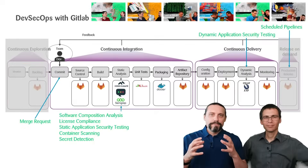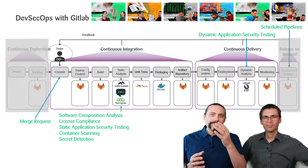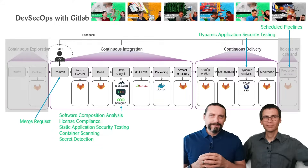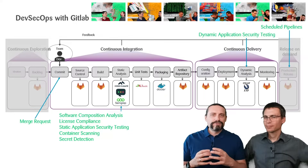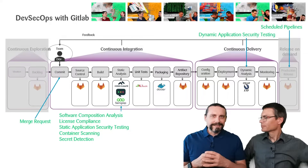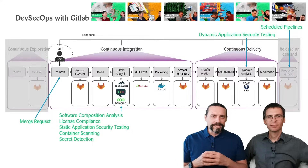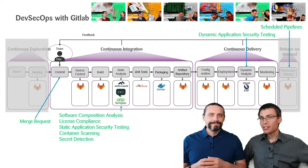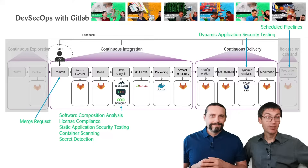In our past 11 videos we built up this DevSecOps pipeline with GitLab. In our first two videos we showed you what exactly GitLab is and how to set up a new project. Then we dived into software composition analysis, so finding vulnerabilities in dependencies.